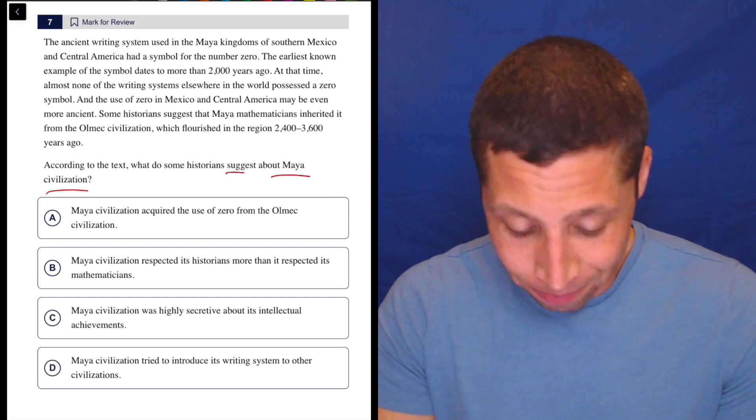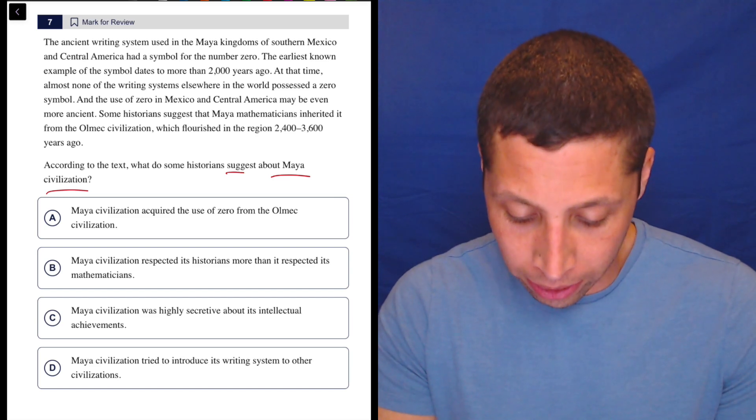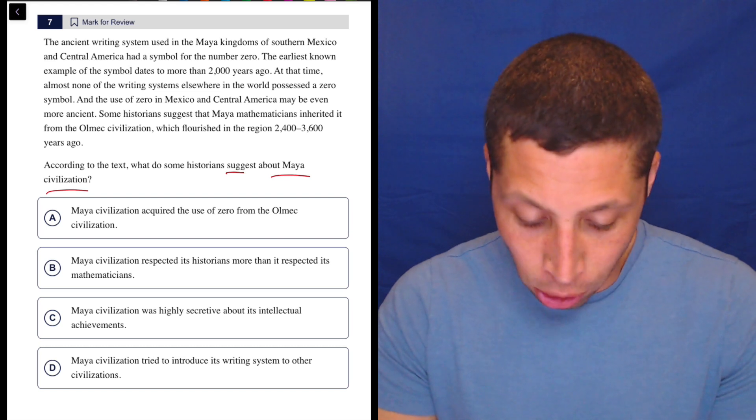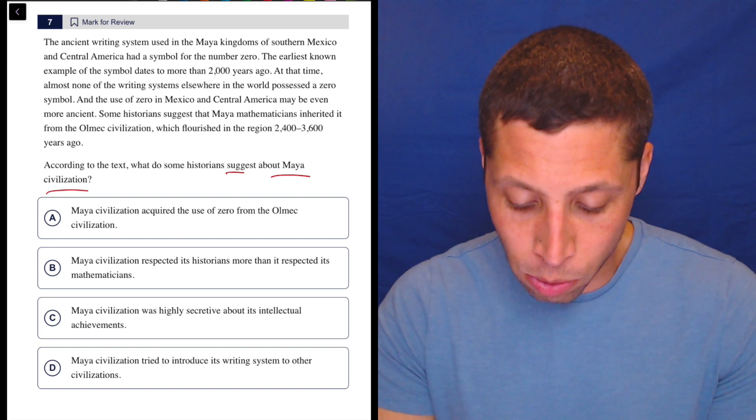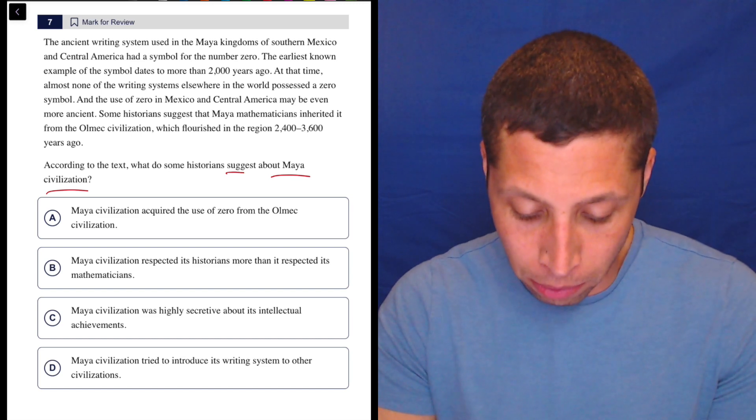Starting with the passage. The ancient writing system used in the Maya kingdoms of southern Mexico and Central America had a symbol for the number zero. The earliest known example of the symbol dates to more than 2,000 years ago.